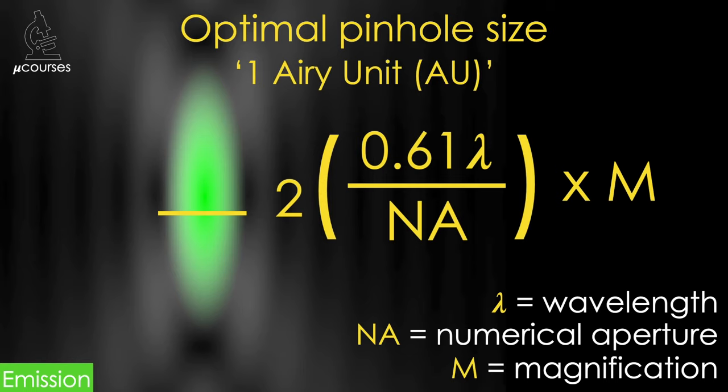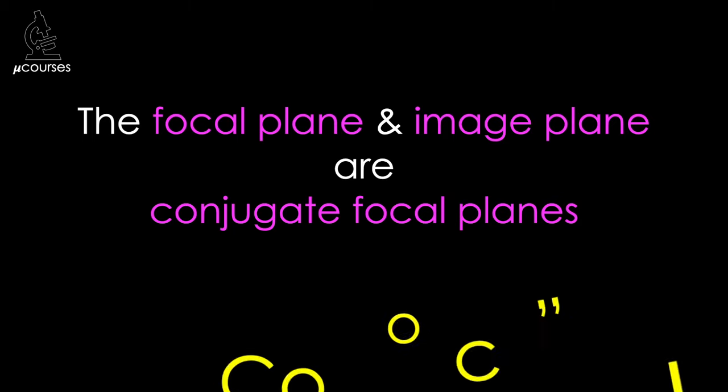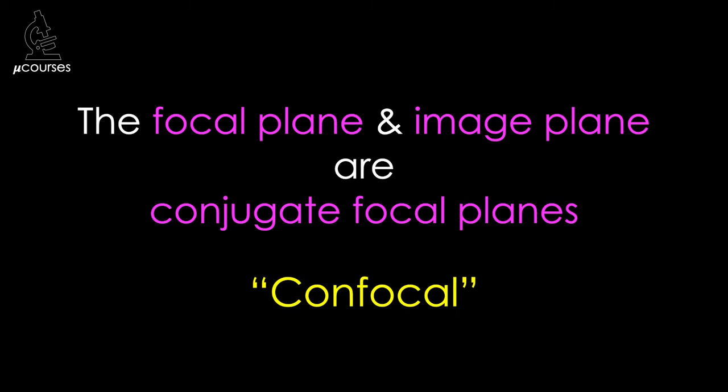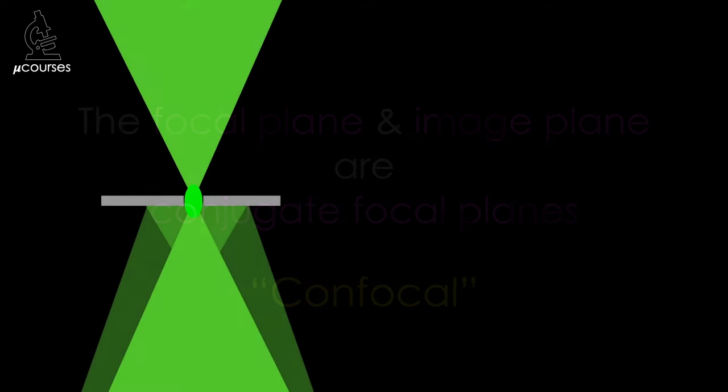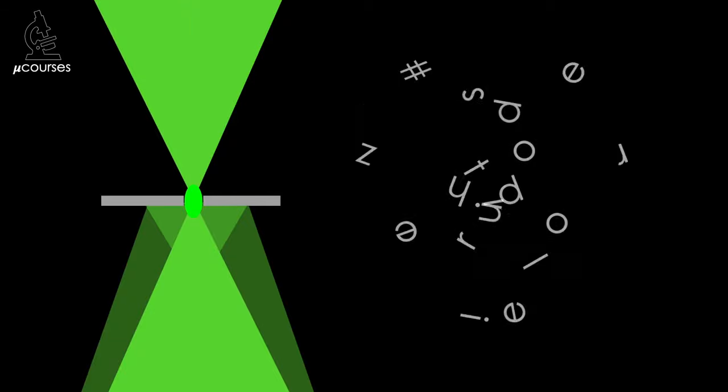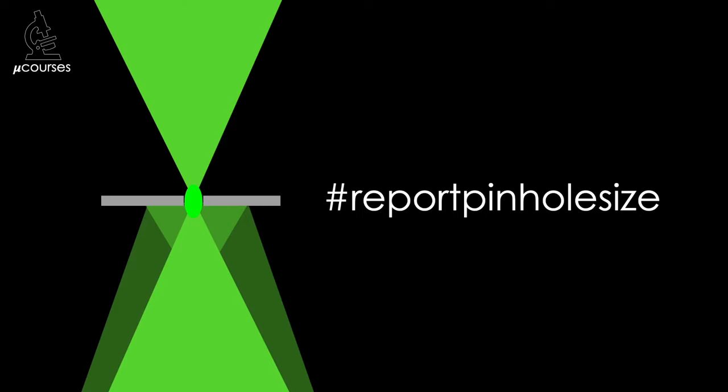That's the basis for how confocal microscopes generate images with reduced out-of-focus fluorescence. Have you ever wondered where the term confocal came from? Now that you understand the confocal principle, it will make perfect sense: the focal plane and the image plane are conjugate focal planes, hence the name confocal. I hope you found this helpful, and now that you understand how important pinhole size is to image quality, I hope that you'll remember to always report the pinhole size in area units or in microns in your methods section.